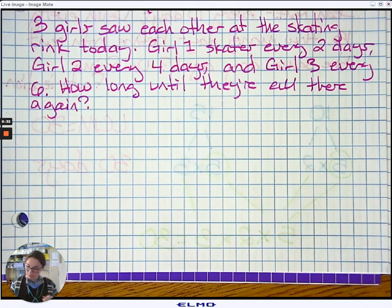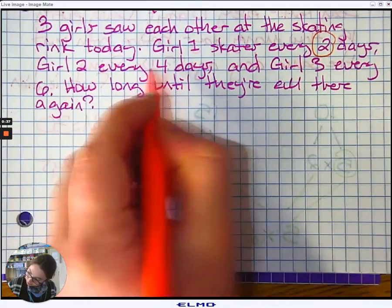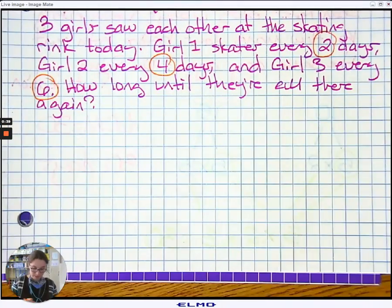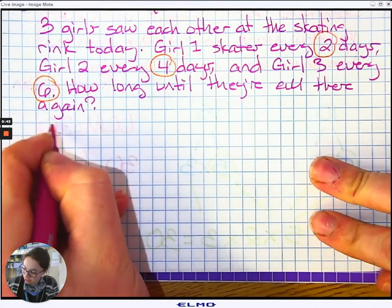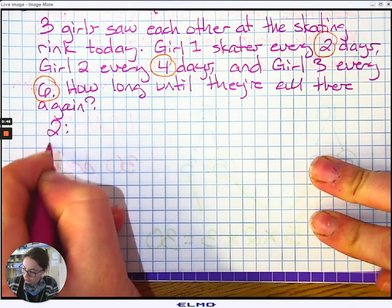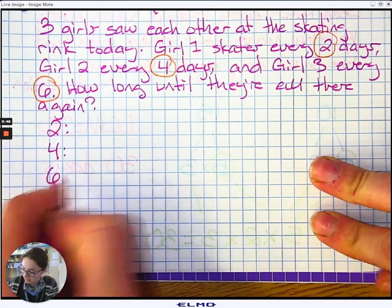So we need to find the least common multiple of two, four, and six. Two, four, and six. We're going to do this using the list method. Two, four, and six.